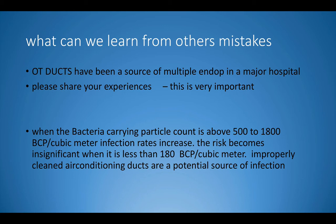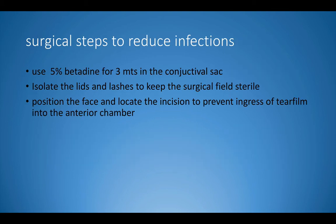As infection is a rare event, if we share information, everybody else can benefit. When the bacteria-carrying particle count is above 500 to 1800 per cubic meter, infection rates increase, and this risk becomes insignificant when it is less than 180 bacteria-carrying particles per cubic meter. Improperly cleaned air conditioning ducts are a potential source of infection. Among important surgical steps, we must use 5% betadine in the conjunctival sac for 3 minutes, isolate the lids and lashes, keep the surgical field sterile, and position the face and incision to prevent ingress of tear film into the anterior chamber.